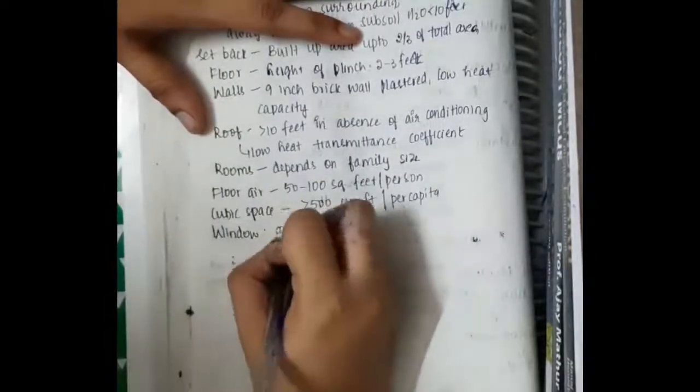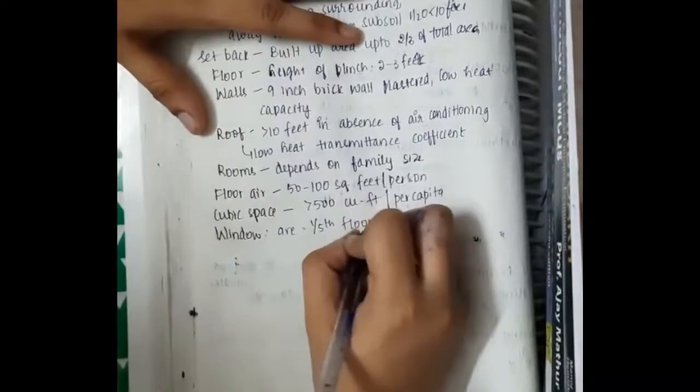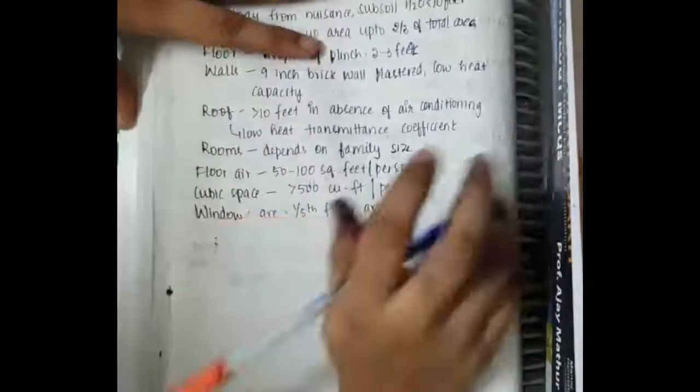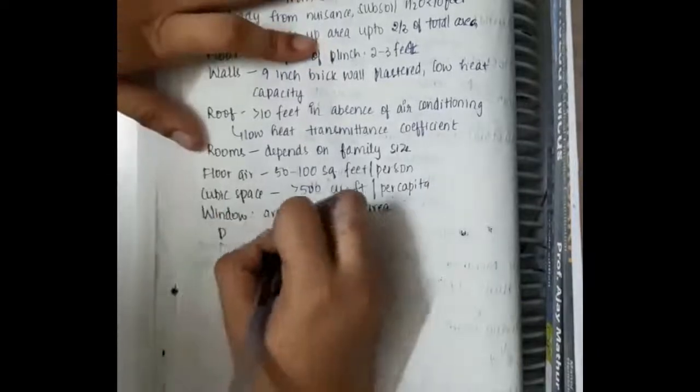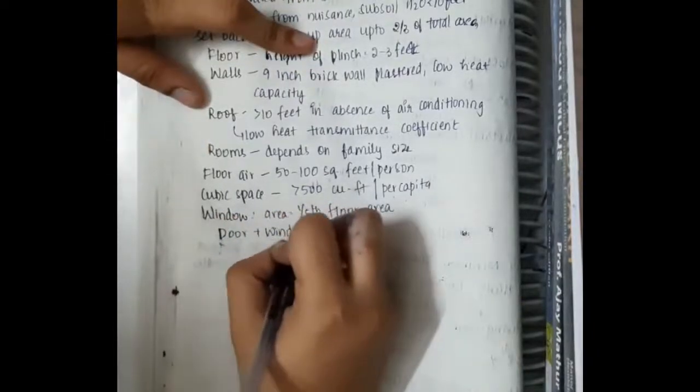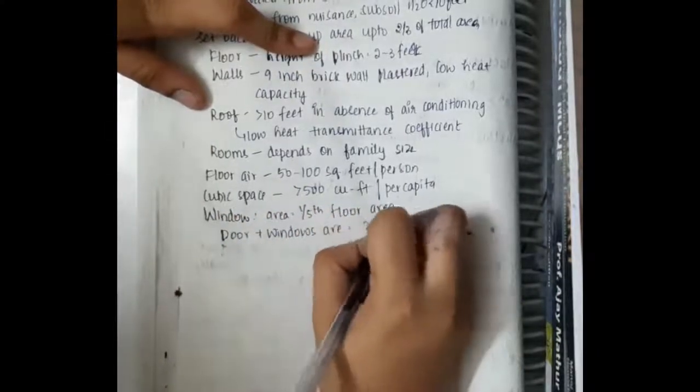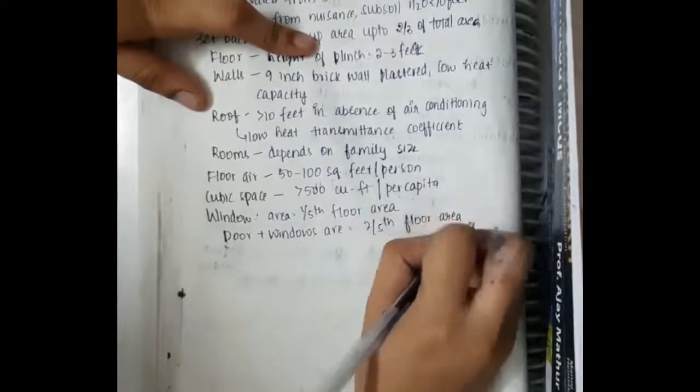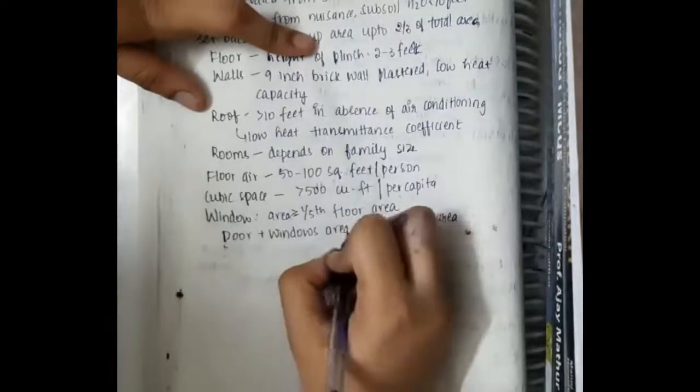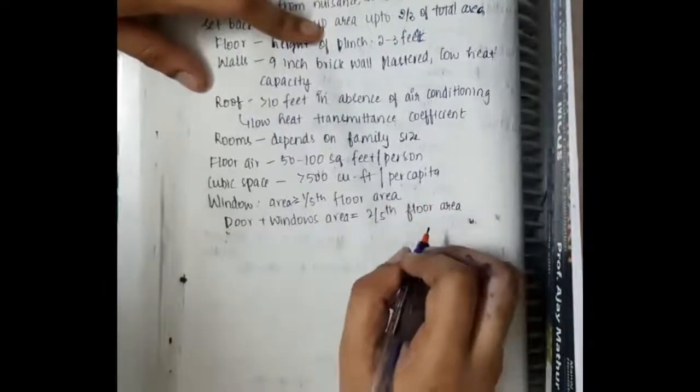Window area should be more than or equal to 1 by 5th the floor area. Then the doors and window area should be equal to 2 by 5th of floor area. Only window area should be more than 1 5th.